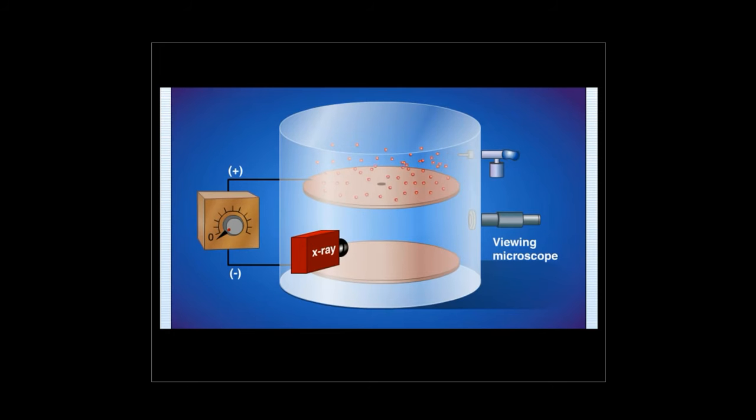Next, Millikan used an X-ray source to ionize gas molecules in the chamber. Electrons from this ionization process adhered to the oil droplets. The oil droplets now carry a negative charge.